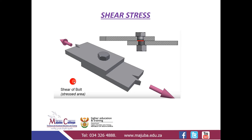This kind of connection is called a lap joint, because of the overlapping of the members directly connected to each other. We call it single shear because our bolt is going to shear once.